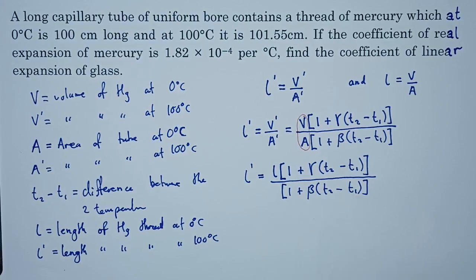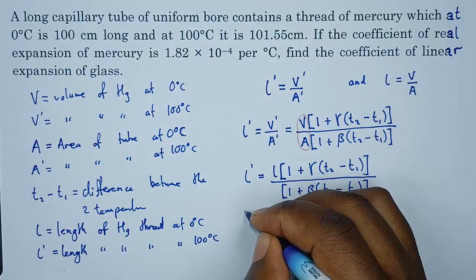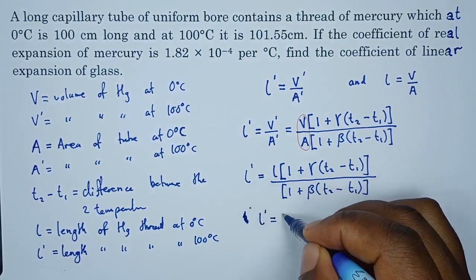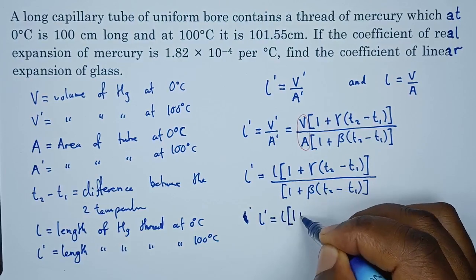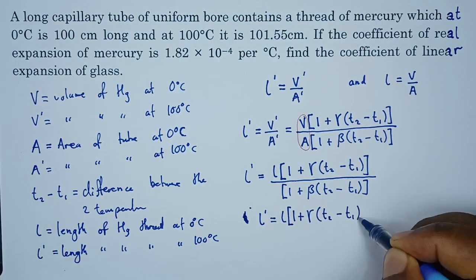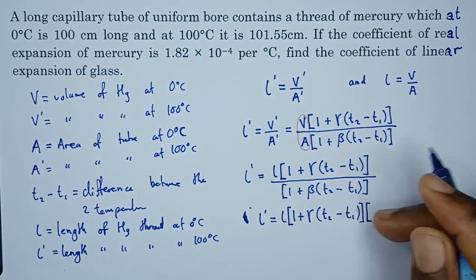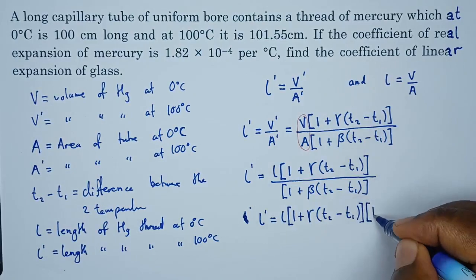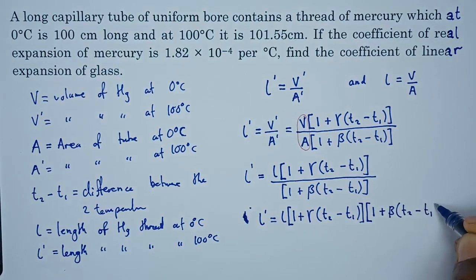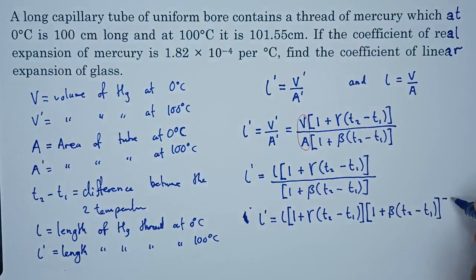We can rewrite this so that L prime equals L times (1 plus gamma times T2 minus T1) multiplied by (1 plus beta times T2 minus T1) to the power negative one.